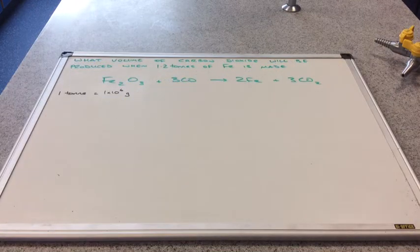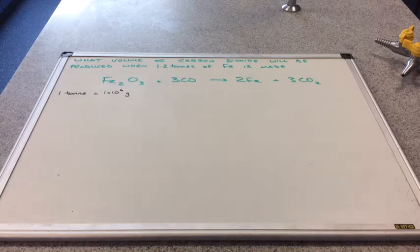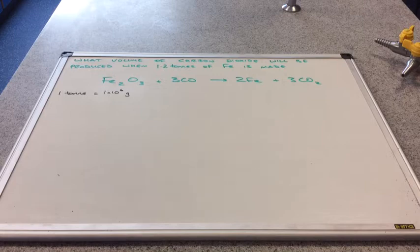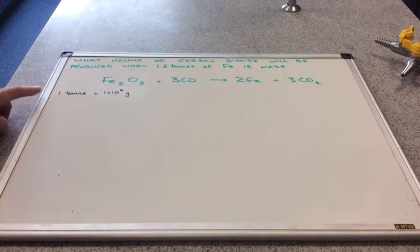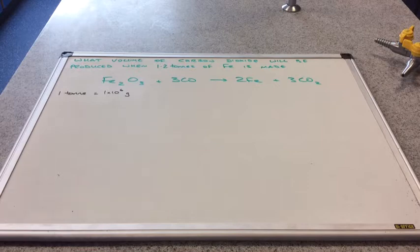We'll have a look at this one now, and I'm introducing the tonne unit to see how we cope with this. So what volume of carbon dioxide will be produced when 1.2 tonnes of iron is made? We're told that 1 tonne equals 1 times 10 to the 6 grams.